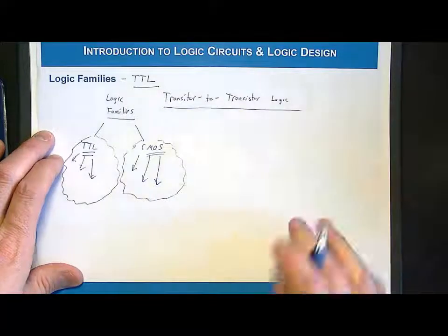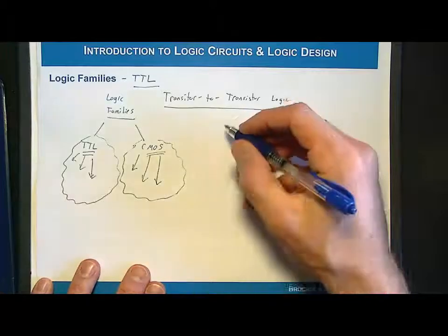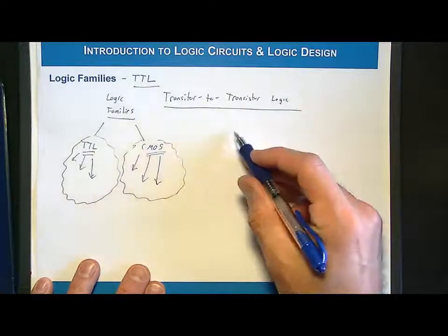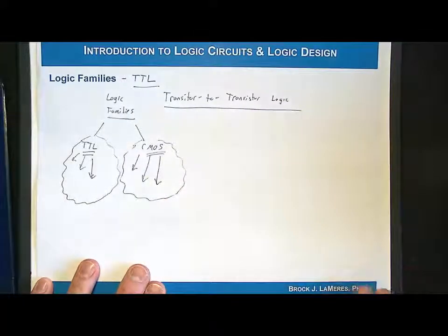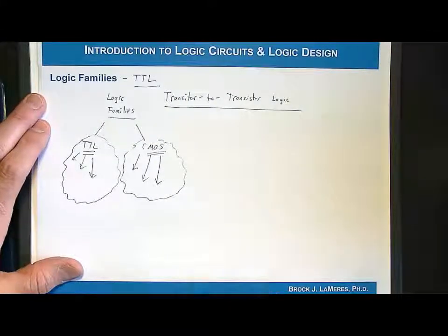TTL was the first way that people made logic circuits. It was talking about a circuit made of transistors communicating to another circuit of transistors. That's where TTL came from. Within TTL, there are two transistors that exist, similar to CMOS.